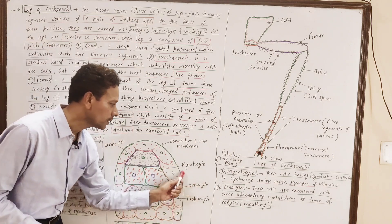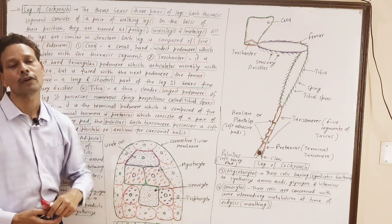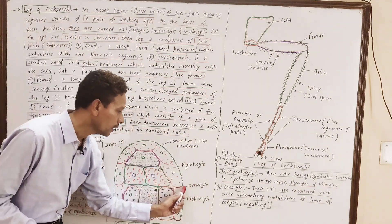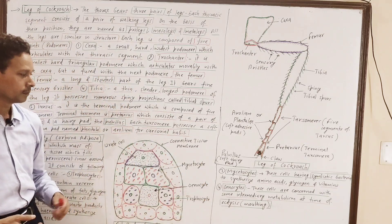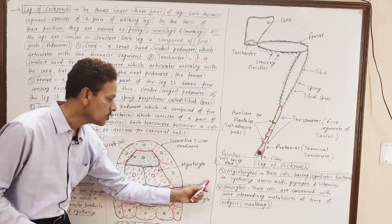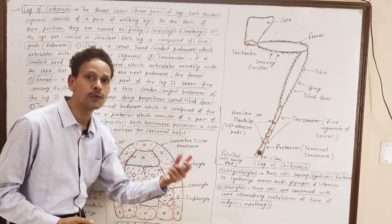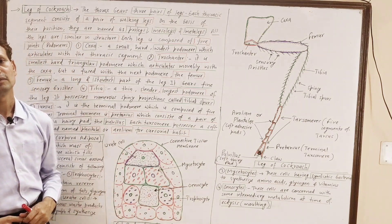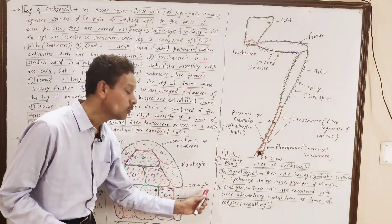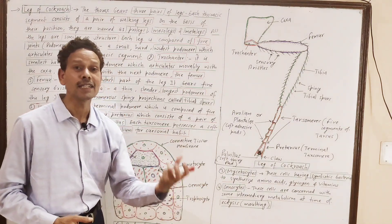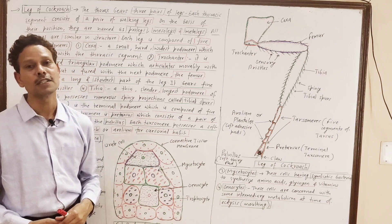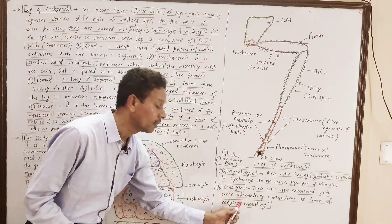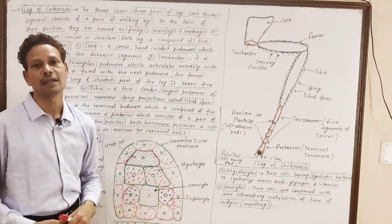The fourth type of cells, very important for competitive exams, are enocytes. These are a special type of cells involved in metabolism. These enocytes secrete certain substances for moulting — ecdysis — of the animal.